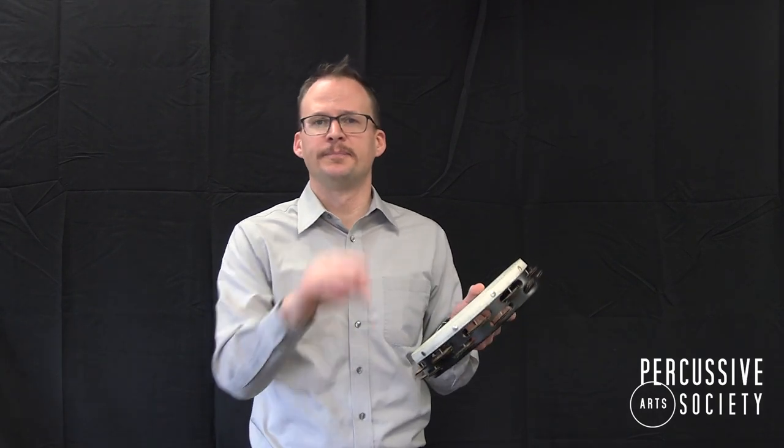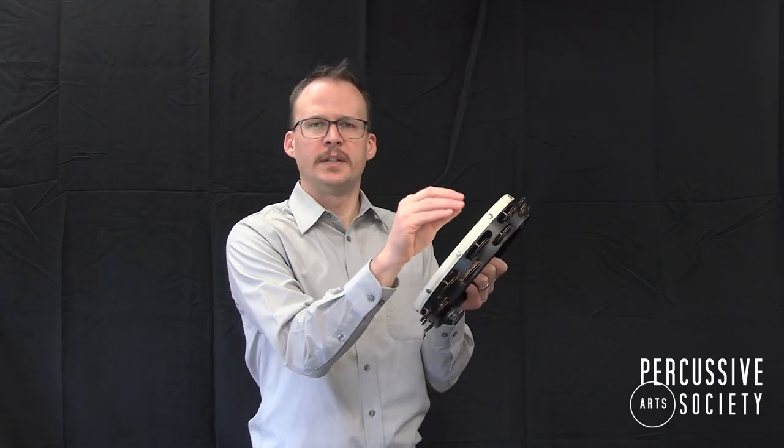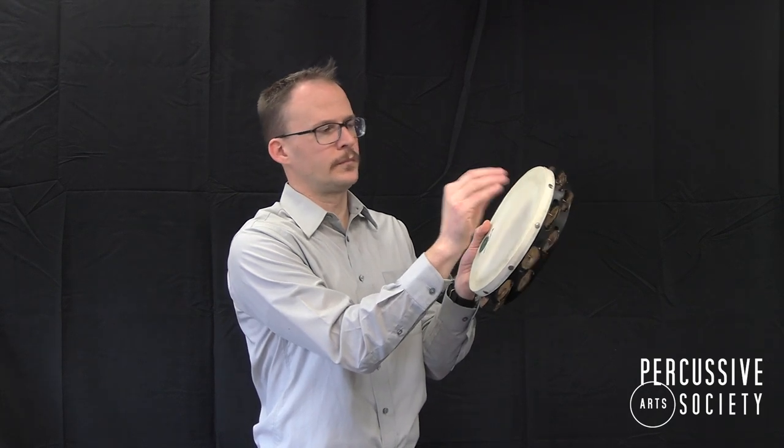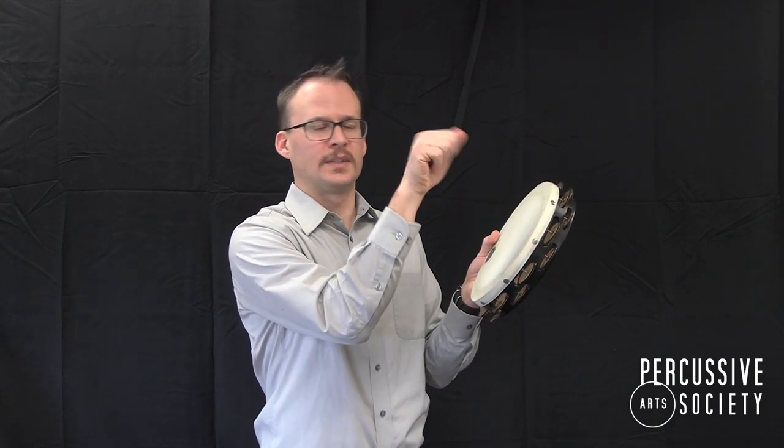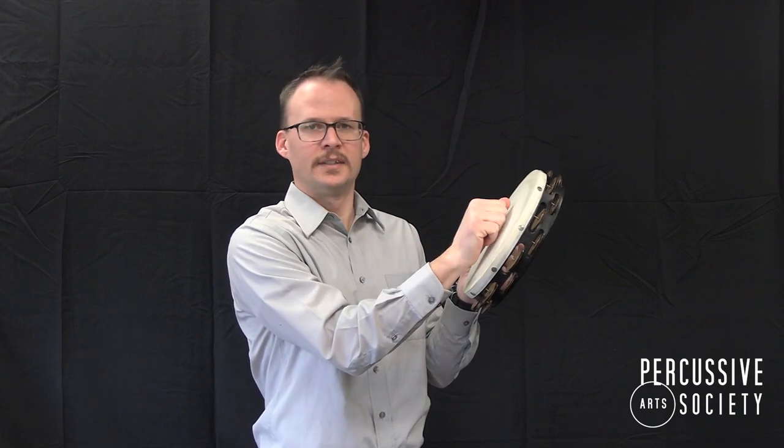For mezzo forte playing, use a duckbill just off-center. And for loud playing, use a fist like we're knocking on the door in the center of the head.